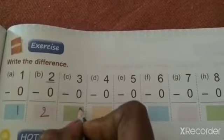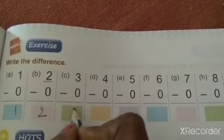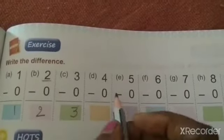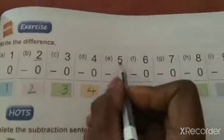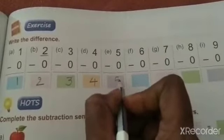Then 3 minus 0. So 3 minus 0, the answer is again 3 only. 4 minus 0, 4. Then 5 minus 0, 5.